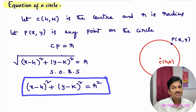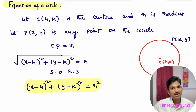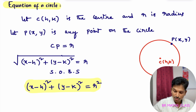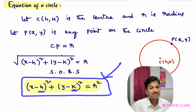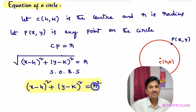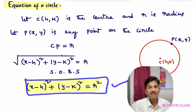So (x - h)² + (y - k)² = r² is the equation of the circle. This is the most important formula — while doing exercise problems we use it very frequently. Whenever asked to find the equation of a circle, we use this formula. For this circle, the center is (h, k) and the radius is r.